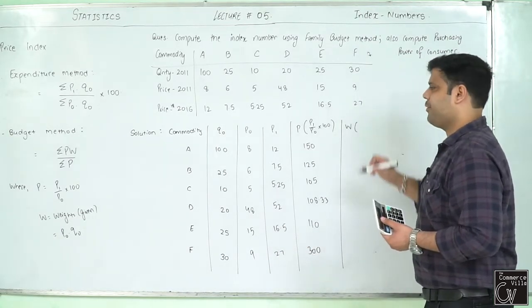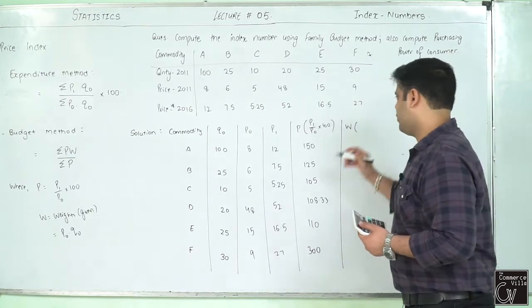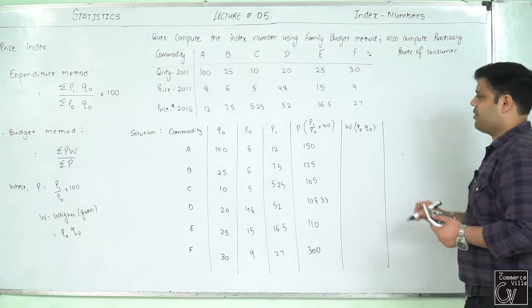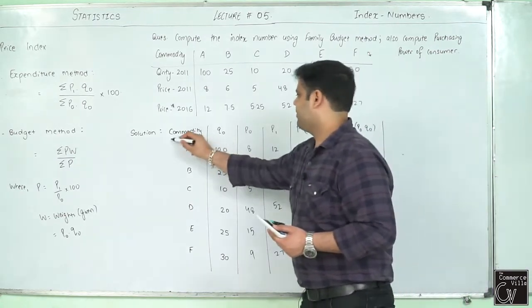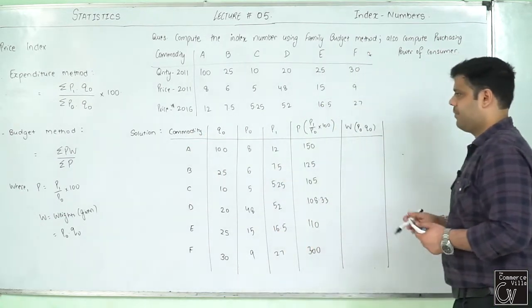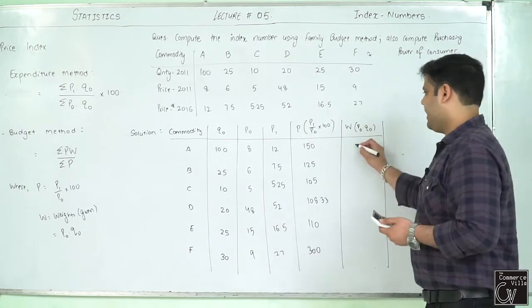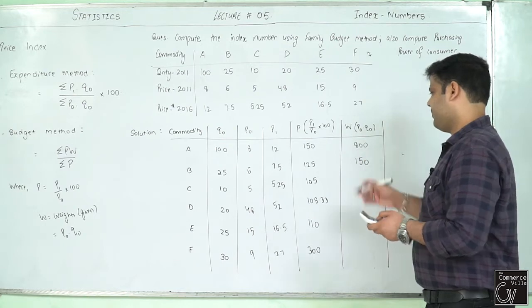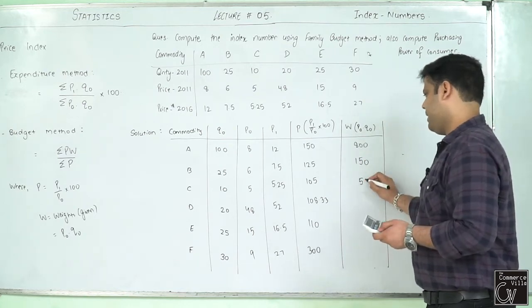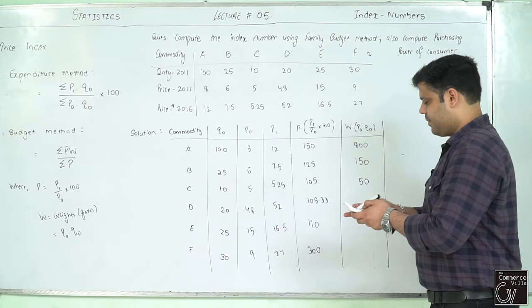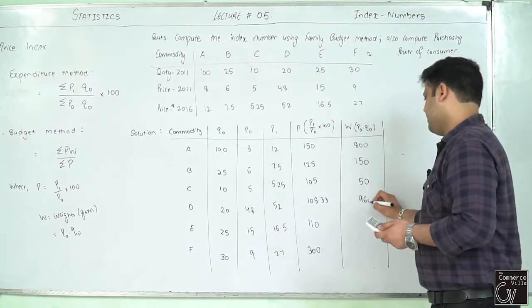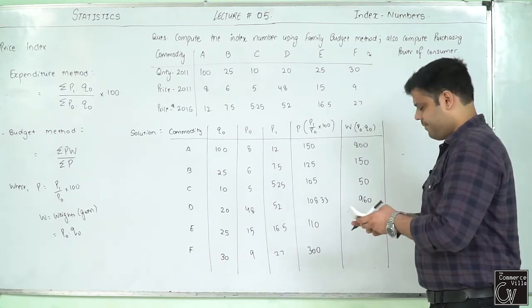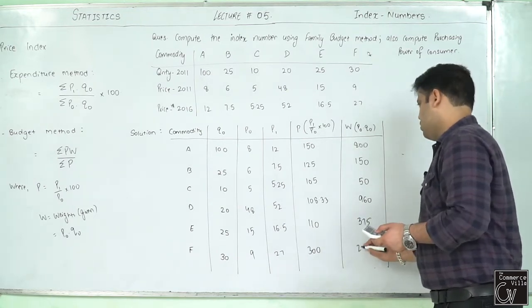W, weights. Is it given in the question? Not given, so P0Q0. Weights are not given in the equation, so P0Q0: 800, 150, 50, 960, 375, 270.